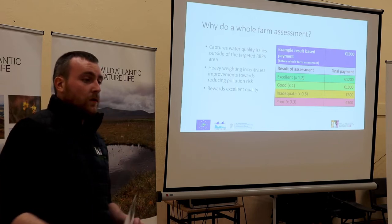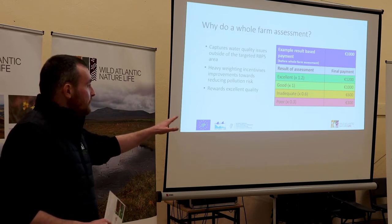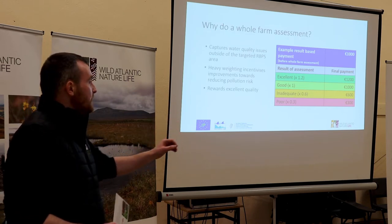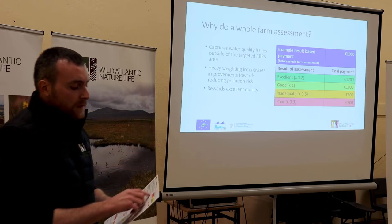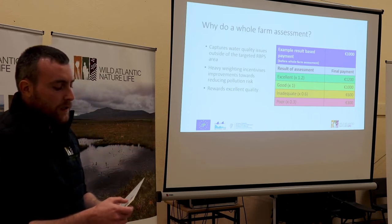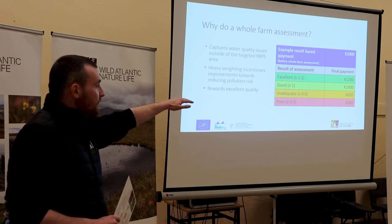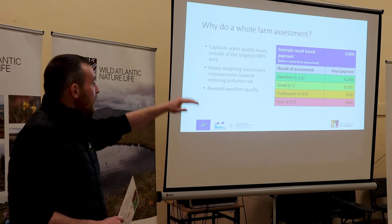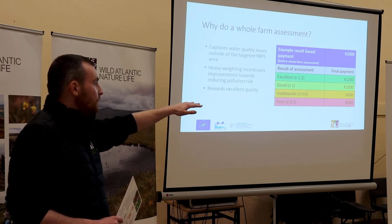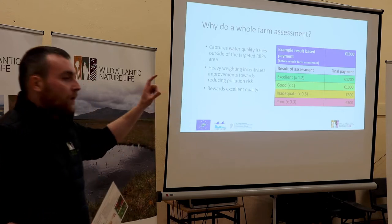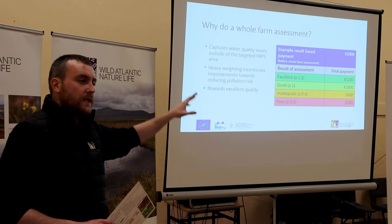So how does the whole farm assessment relate to you? Once your whole farm assessment is done, you're going to be given a score of either excellent, good, inadequate, or poor. Each of those different categories has a number beside it: excellent 1.2, good 1.0, inadequate 0.6, and poor 0.3.